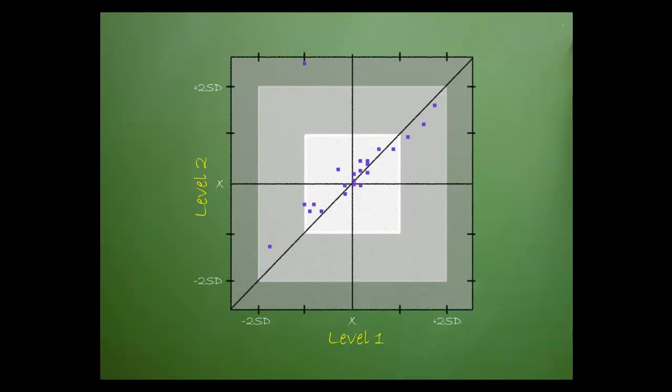Results can be considered linear when the points are on or near the angle line. Linear means that both levels are responding to testing in the same direction.